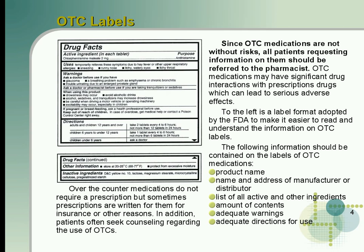The following information should be contained on labels of OTC medications: product name, name and address of manufacturer or distributor, list of all active ingredients and other ingredients, amount of contents, adequate warnings, and adequate directions for use.